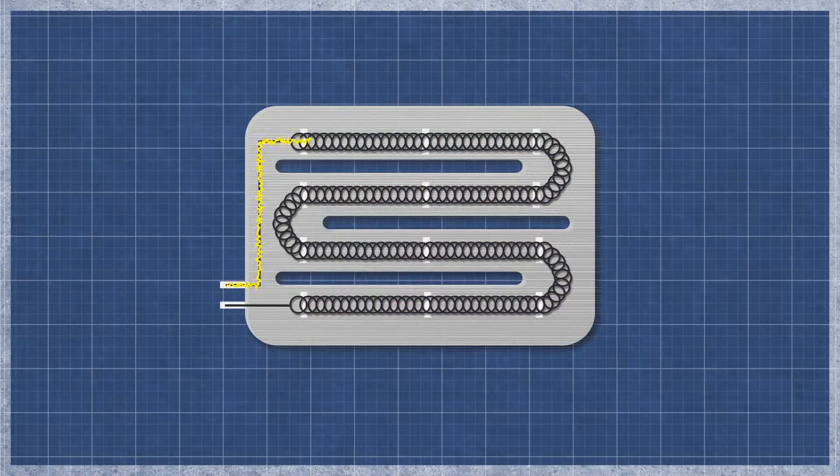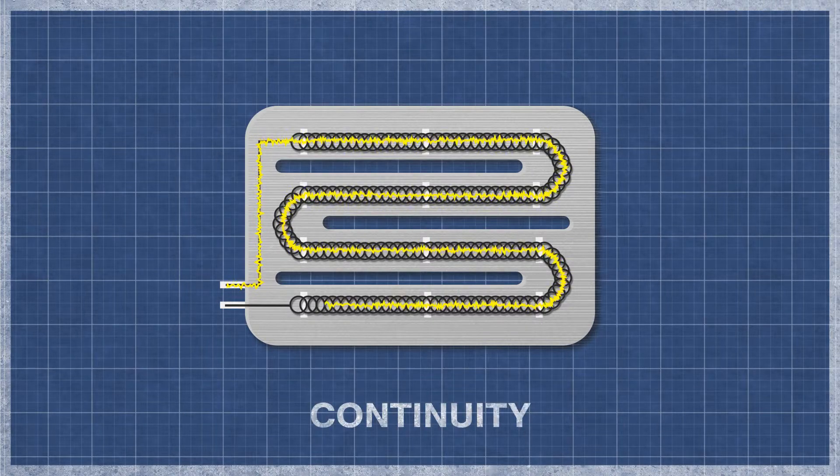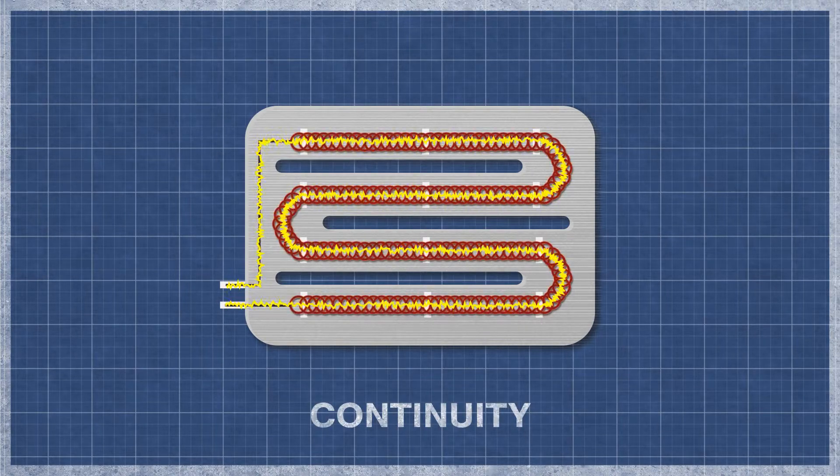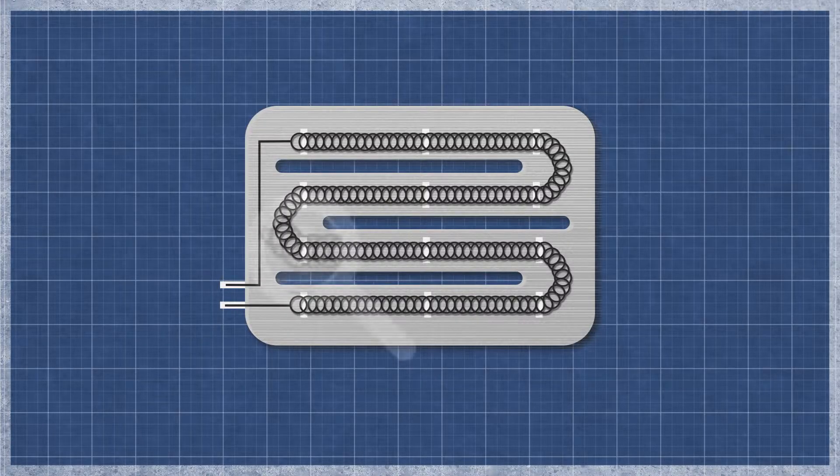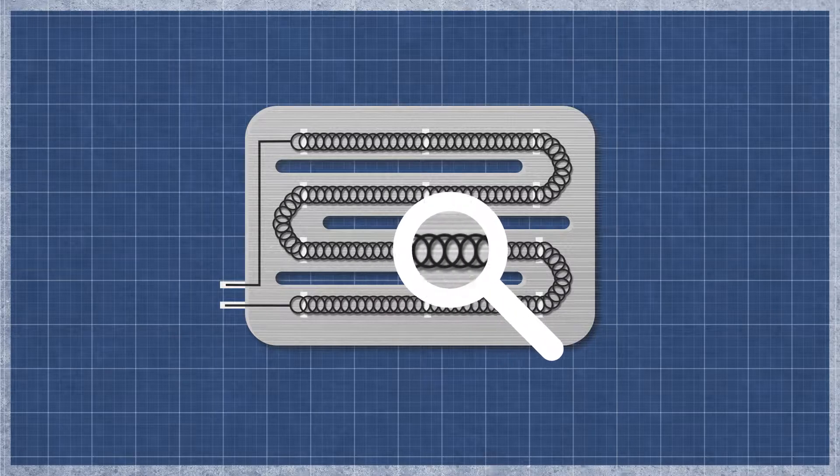A dryer heater works similarly to an incandescent light bulb. As electricity flows through the element, the resistance in the material generates heat. The element can burn out over time with normal use and may appear singed or cracked. This can be difficult to see as even a small break can cause an element to fail.